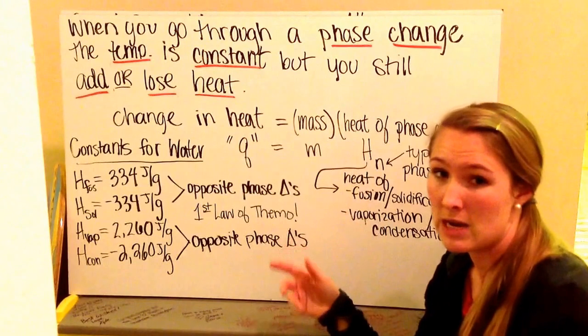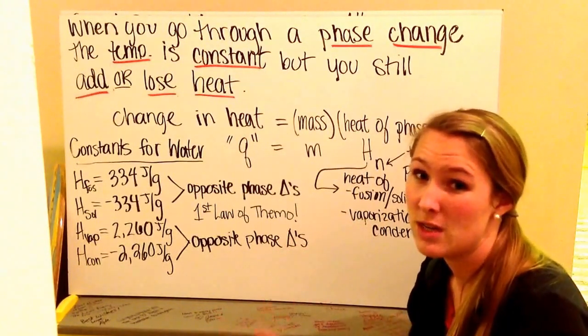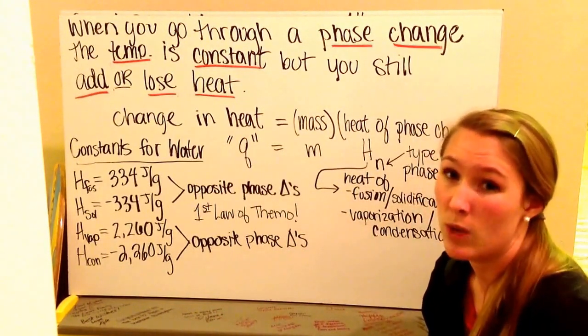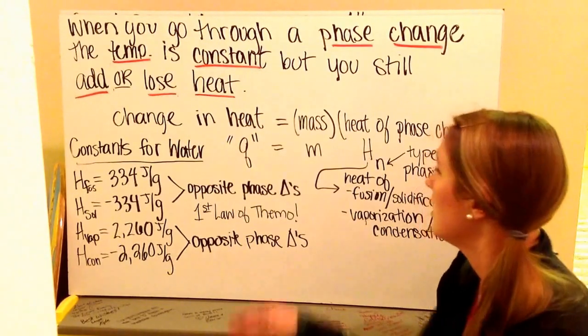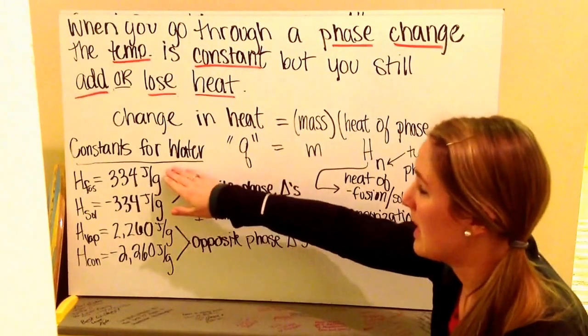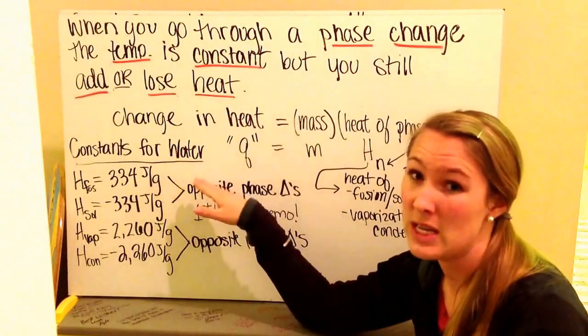Sometimes it has a delta sign in front saying that there's a change in heat. We want to know what the actual heat was because we're concerned about whether it's being endothermic or exothermic.